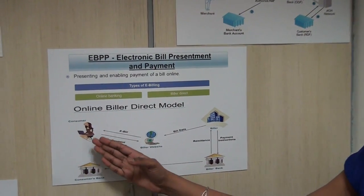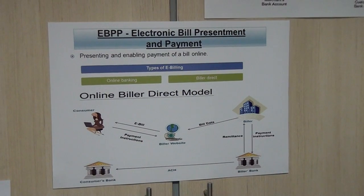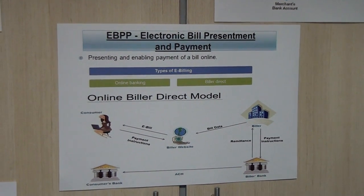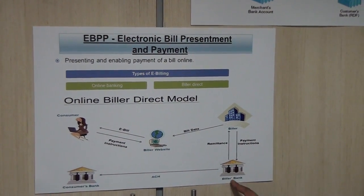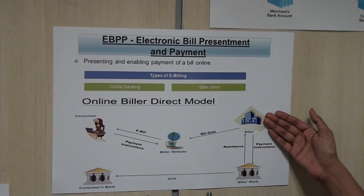Over here, the consumer registers himself or herself to the biller side. They get the bill on a monthly basis. They make the payment. And the biller bank and customer bank does the settlement. And payment is given to the billers.